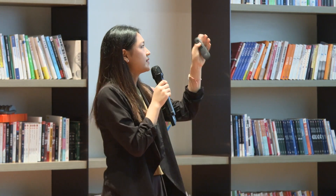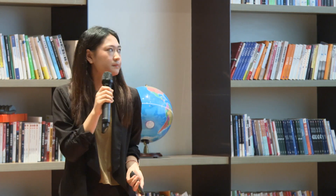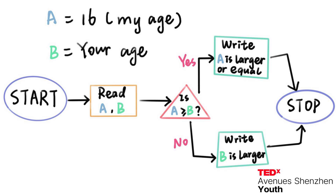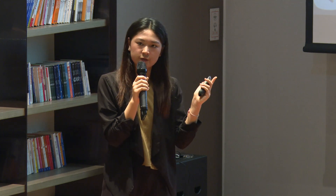It still sounds a bit complicated, right? So, for us to break things down, I would like you to think about your age right now. My current age is 16 years old — feel free to think about your age 10 years ago. Then try to substitute your age with the letter B here, and my age will be represented with the letter A. We're going to imitate a process that algorithms use to think. First, you read what A and B are. Then we compare A with B to see if A is greater than B, equivalent to B, or B is greater than A.